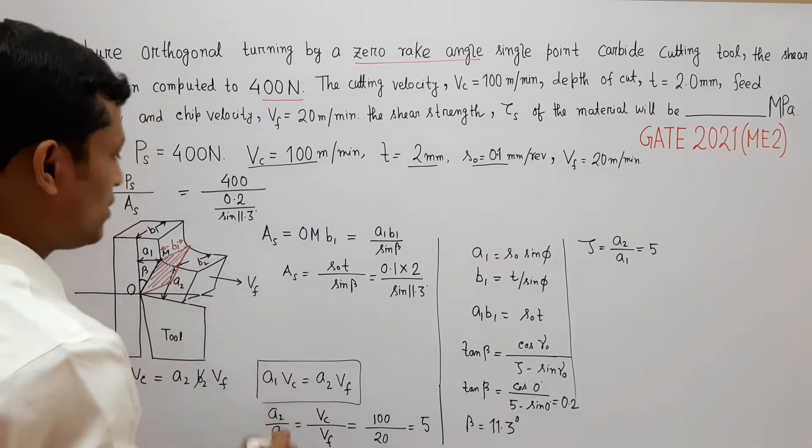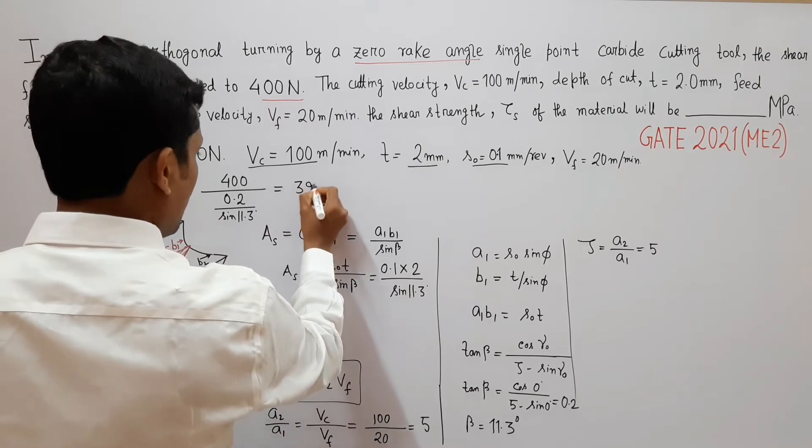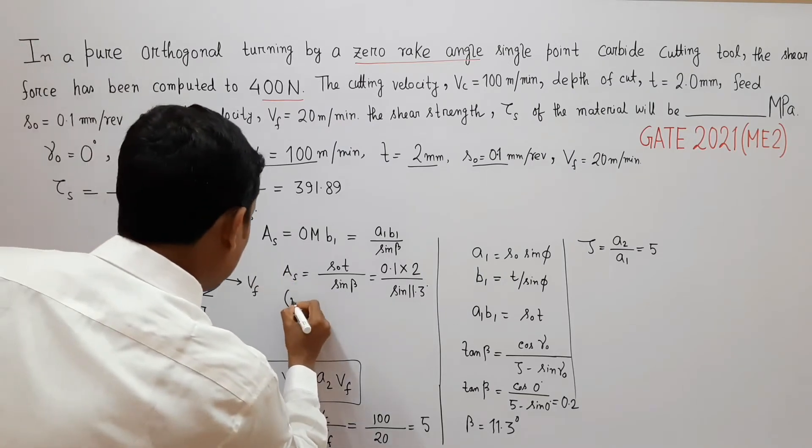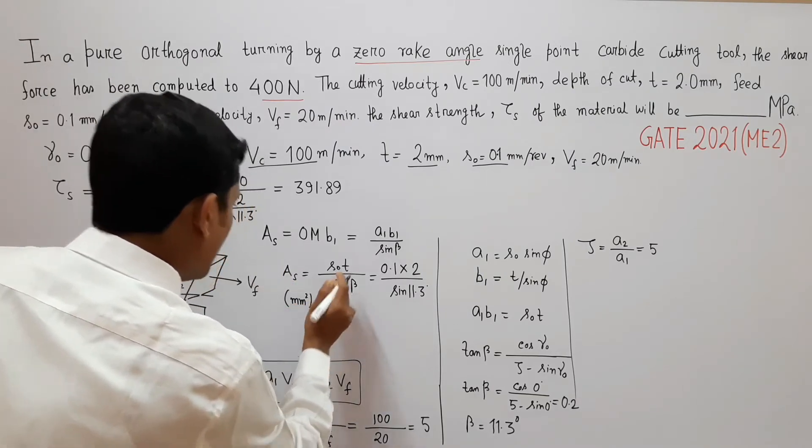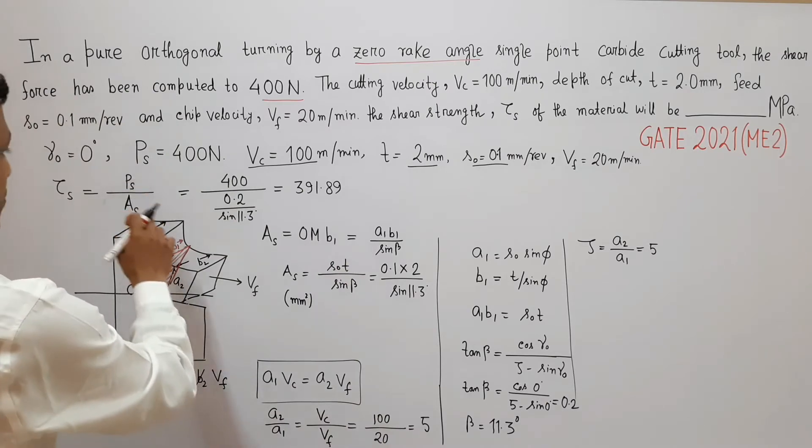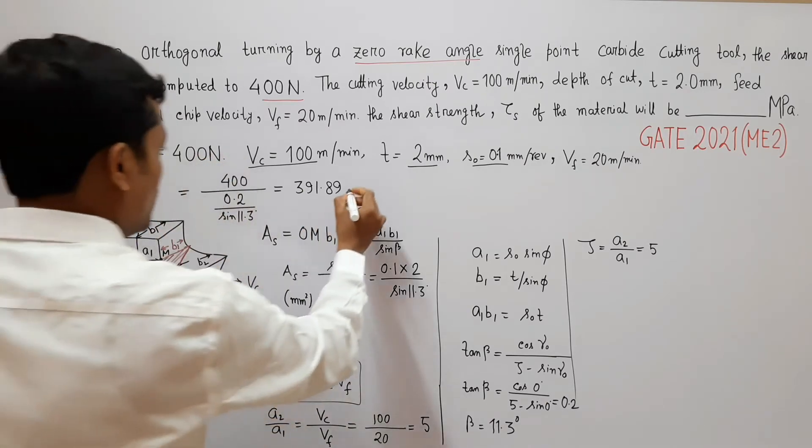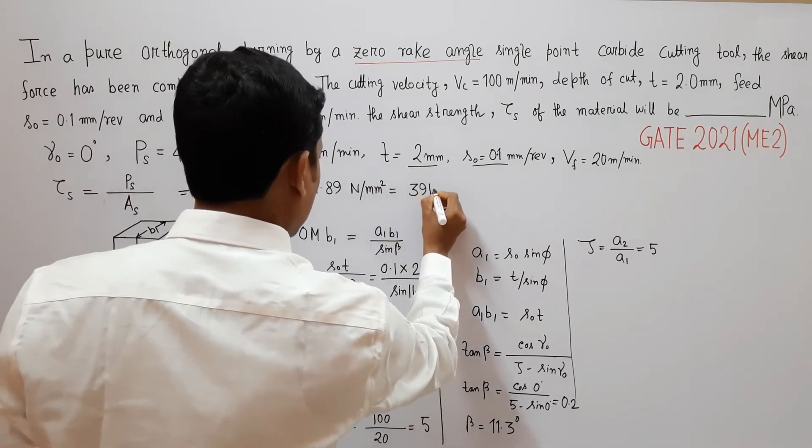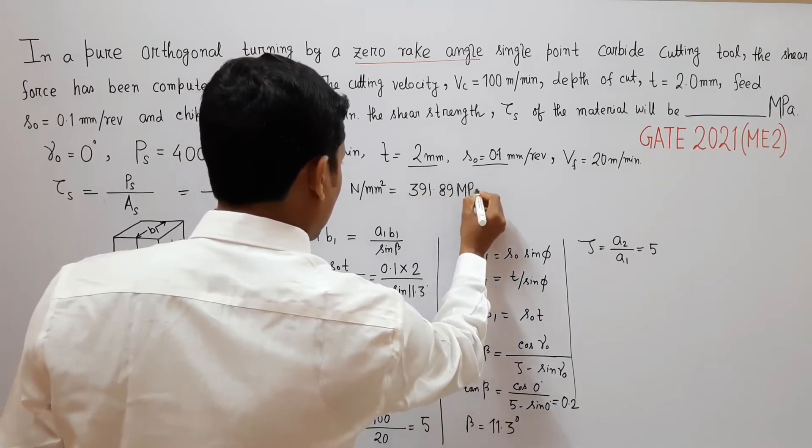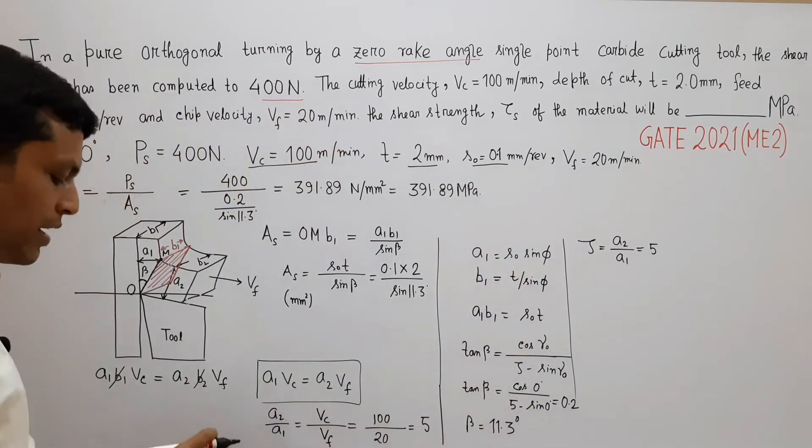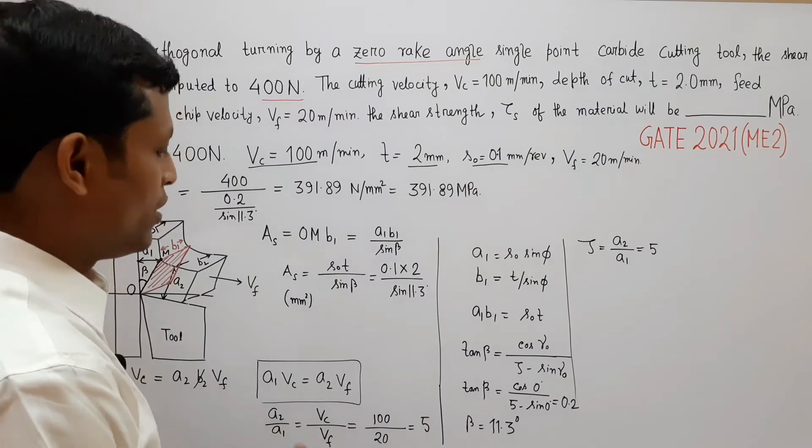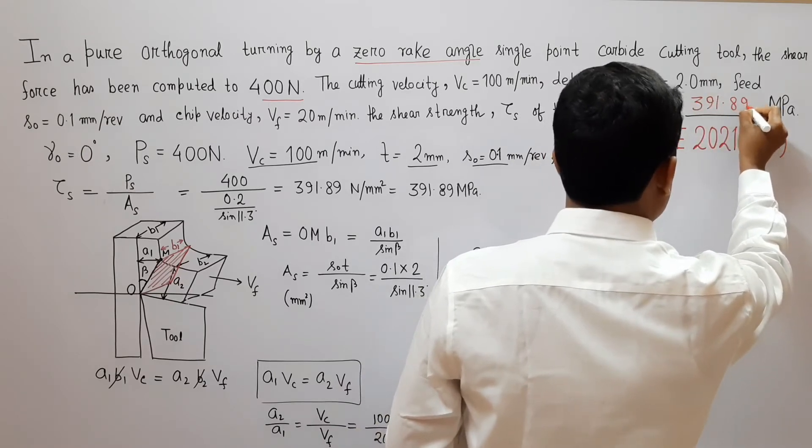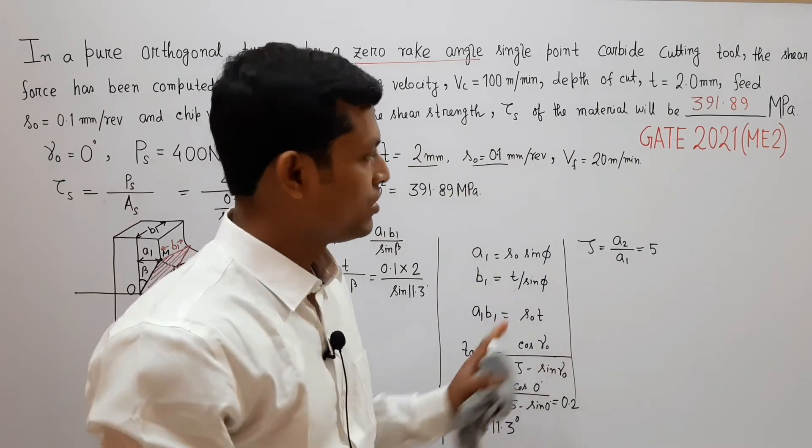So if you calculate this, this becomes 391.89 and what will be the unit? A_s is in millimeter square because this is in millimeter, this is in millimeter and P_s is in Newton. So our answer will be 391.89 MPa. So this is the answer for this question.